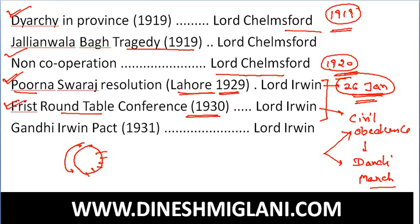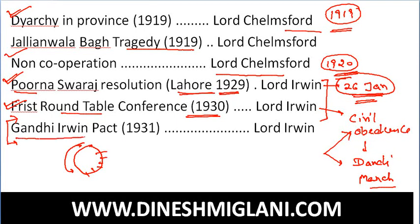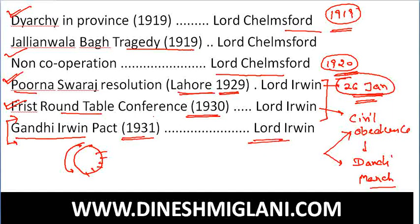At that time, Lord Irwin made a pact with Gandhiji, which is named the Gandhi-Irwin Pact of 1931. This pact was made to convince Gandhiji so that he would participate in the Second Round Table Conference and go to London to be a party to it. That was in the time period of Lord Irwin.